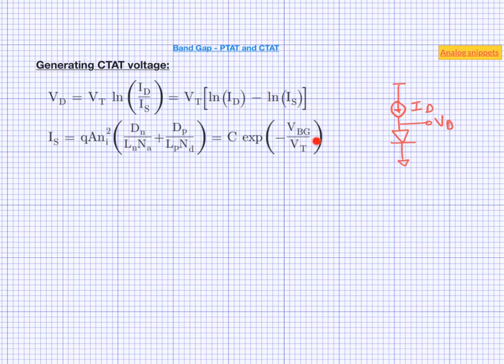Here VBG is the band gap voltage of silicon and VT is the familiar thermal voltage. C represents everything else. Now C itself is a function of temperature, but in presence of exponential term, its effect is rather mild. We will return to the effect of temperature dependence of the term C in a future video when we will discuss the curvature of the band gap reference voltage.